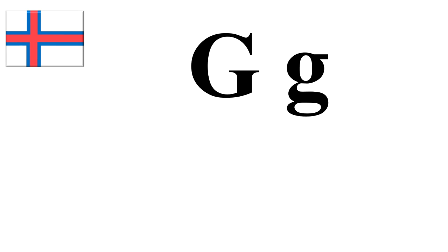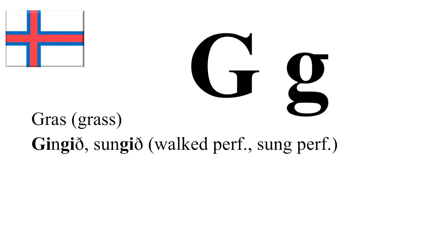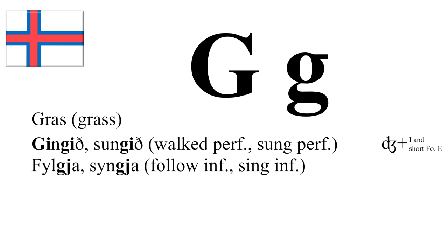Then we have G — Gräs. When you pair G with E together, you have a J sound. So JIN-J and SUN-J. Now in JIN-J, the first vowel is E and the second is the short Faroese E — JIN-J. And then SUN-J ends with the short Faroese E — SUN-J. Likewise, FILL-J and SUN-J is the J sound again, but these end with A instead.